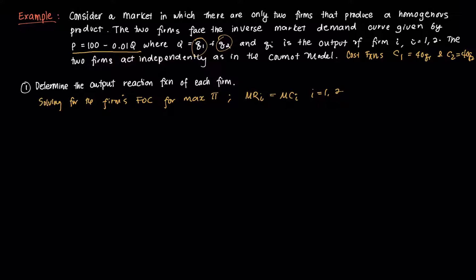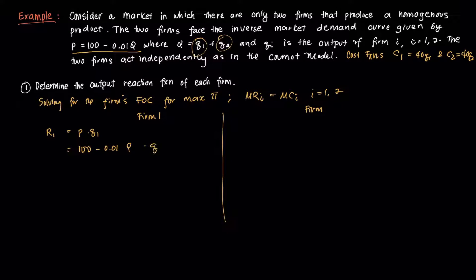For firm 1, revenue R1 = P × Q1. Since P = 100 − 0.01Q and Q = Q1 + Q2, we substitute to get R1 = (100 − 0.01(Q1 + Q2)) × Q1.